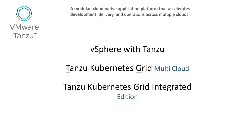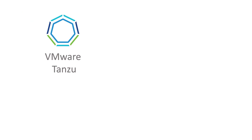Lastly, we have Tanzu Kubernetes Grid Integrated Edition, sometimes referred to as TKGI. This edition used to be called PKS, or Pivotal Kubernetes Service, and came from VMware's acquisition of Pivotal back in late 2019. It's VMware's oldest and most mature distribution of Kubernetes. TKGI is a bit like the uncle at a party that no one invited but keeps showing up — while it's still supported and getting regular updates, it's going through a sunset phase and generally not chosen over the other two editions. And there you have it: VMware Tanzu explained simply.